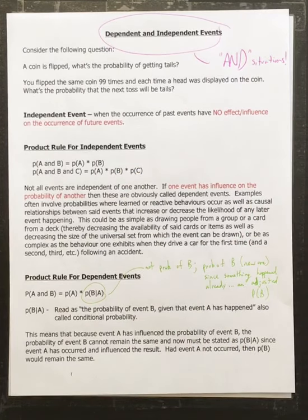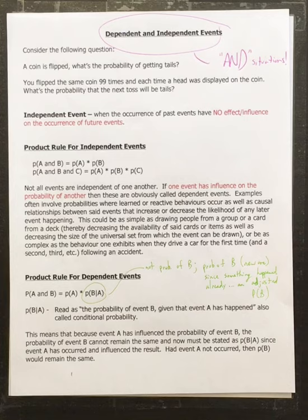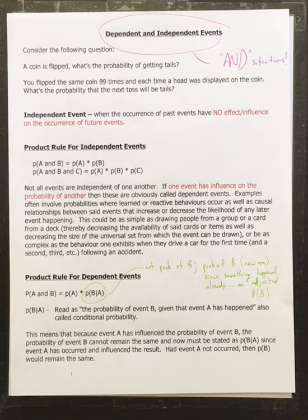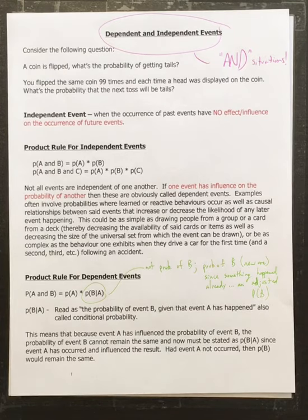A good example: if you know genetics, there's roughly a 50-50 chance of having a boy or a girl. So if there's a family of three kids, the probability is one half for the first child, one half for the second, one half for the third. The probability of getting three boys is one half times one half times one half, which equals one eighth. We multiply — we don't add.